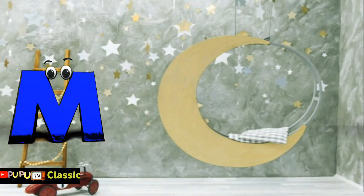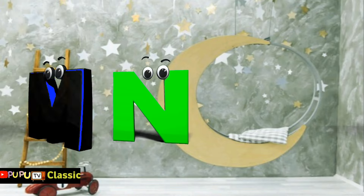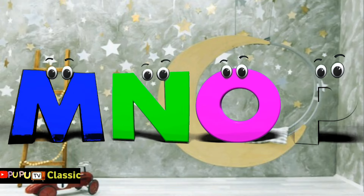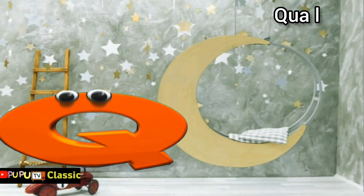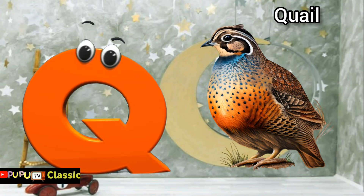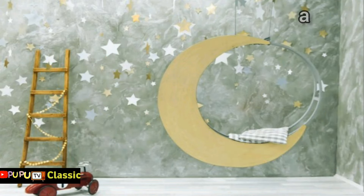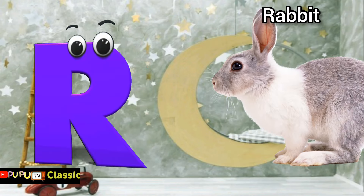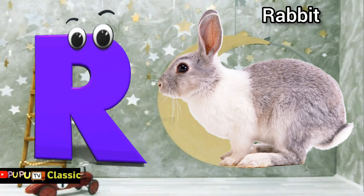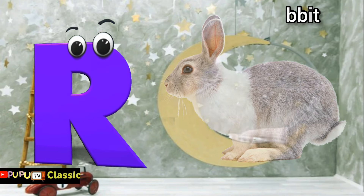Q is for quail, qu-qu-qu-quail. R is for rabbit, r-r-rabbit.